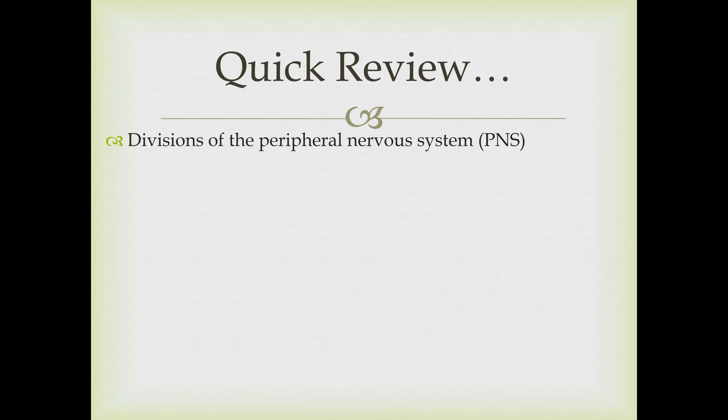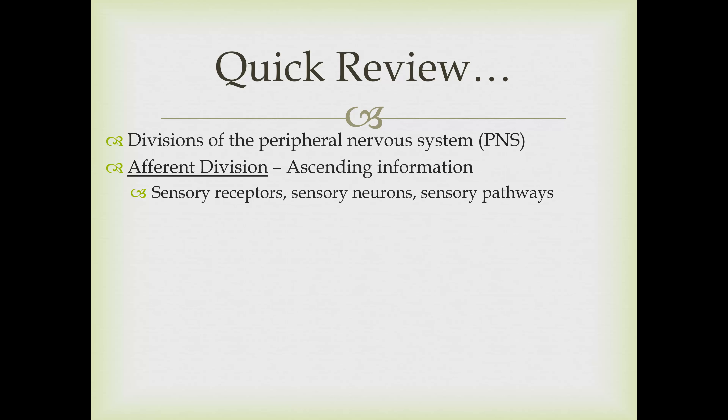Looking at the divisions of the peripheral nervous system, we have the afferent division, which is the ascending information going from the body up to the brain. We'll talk about this in more detail in this chapter and in chapter 17, and this includes your sensory receptors, your sensory neurons, and the various sensory pathways. Somatic sensory info—your body senses like touch, smell, taste, and the position of your joints and muscles—goes to specific sensory cortical areas we'll cover in chapter 17.